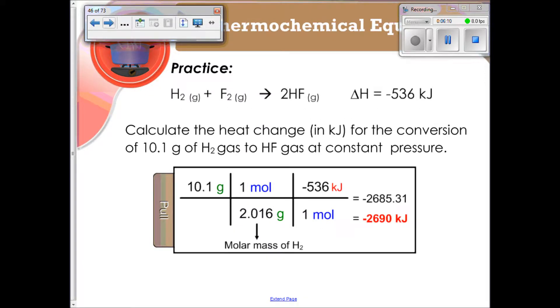All right, so let's practice that. We've got the example written right below. It says, calculate the heat change in kilojoules for the conversion of 10.1 grams of H2 gas to hydrogen fluoride gas, at a constant pressure. So we're going to do this with stoichiometry. This is my given. 10.1 grams of H2 gas.